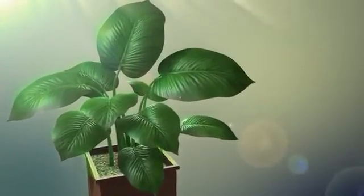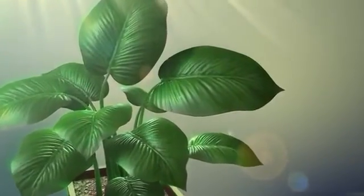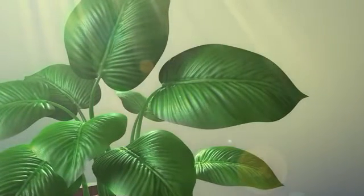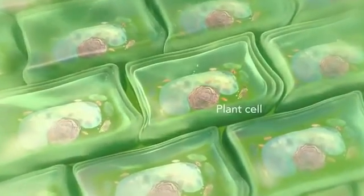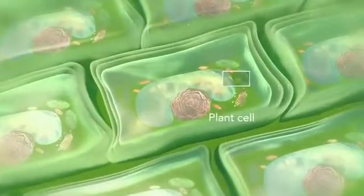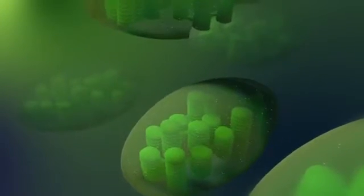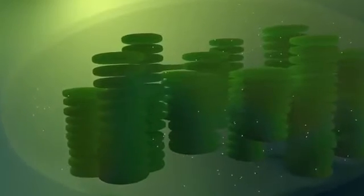Some organisms, such as plants, that are photo-autotrophic, meaning they capture sunlight for energy, have cells with an organelle called a chloroplast. The chloroplast is where photosynthesis happens. It's green because it has a green pigment called chlorophyll.